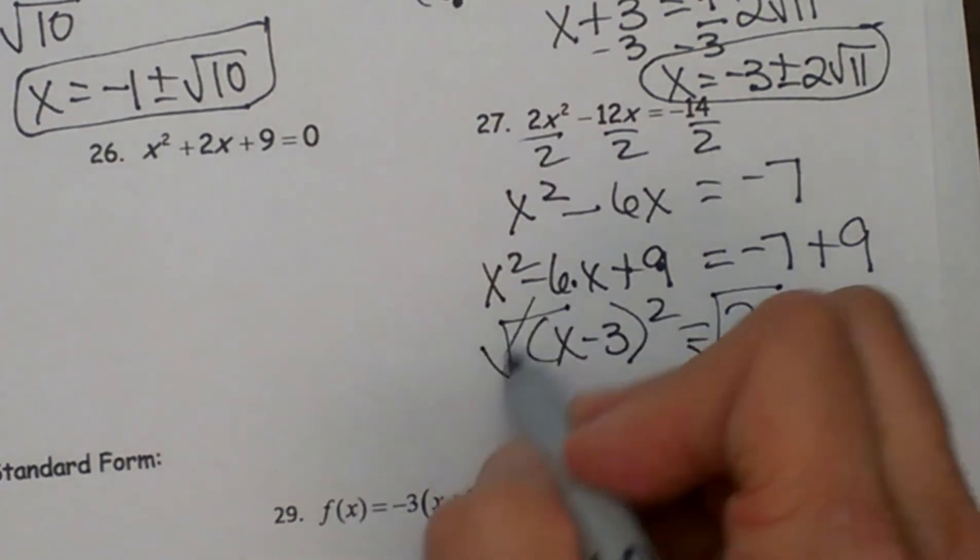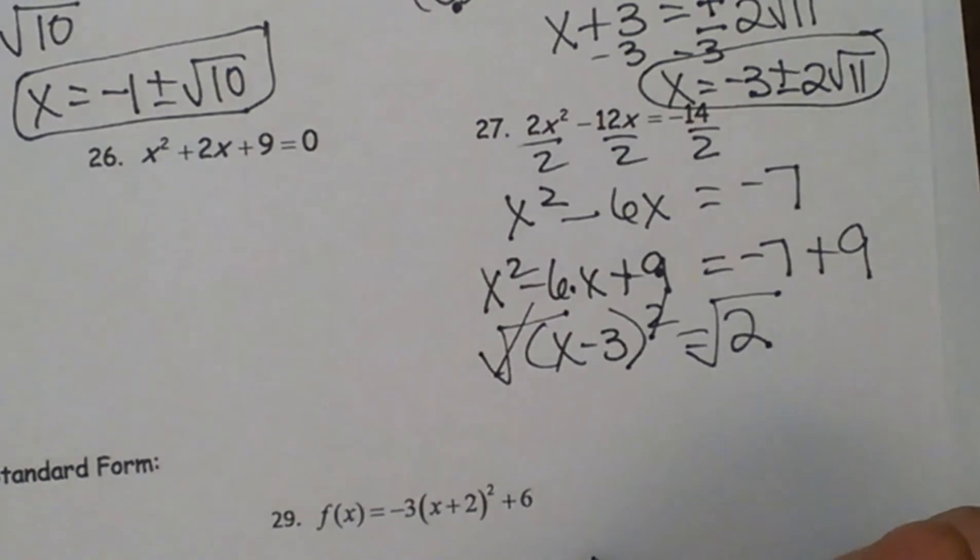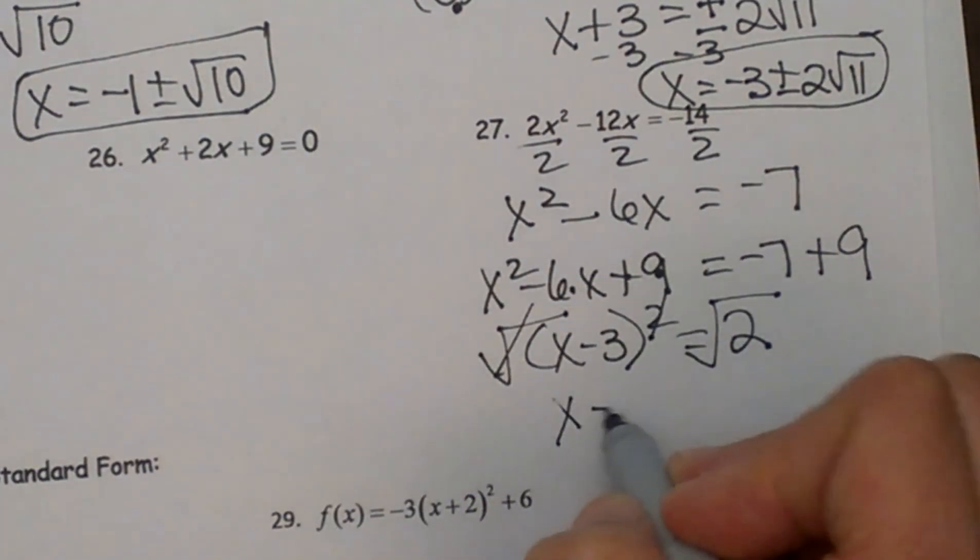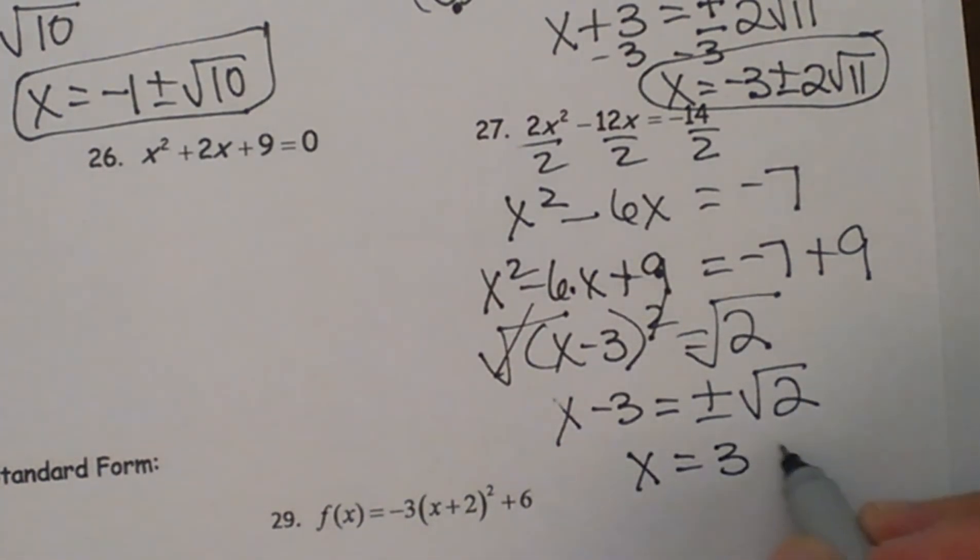Let's take the square root of both sides, so I am left with x minus 3 on the left side. On the right I have to account for both solutions, positive and negative, so I have x minus 3 is equal to plus or minus square root of 2. And then add 3, so x is equal to positive 3 plus or minus square root of 2.